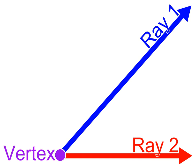Two angles that sum to a straight angle (one half turn, 180 degrees, or π radians) are called supplementary angles. If the two supplementary angles are adjacent — i.e., have a common vertex and share just one side — their non-shared sides form a straight line. Such angles are called a linear pair of angles. However, supplementary angles do not have to be on the same line and can be separated in space. For example, adjacent angles of a parallelogram are supplementary, and opposite angles of a cyclic quadrilateral (one whose vertices all fall on a single circle) are supplementary.